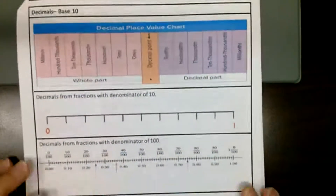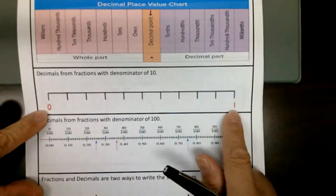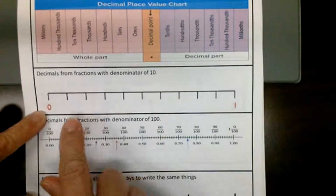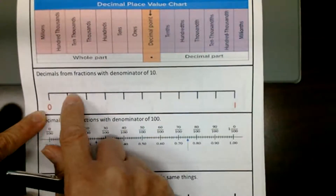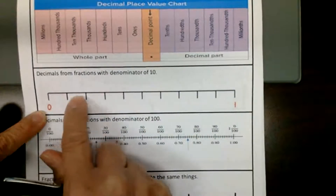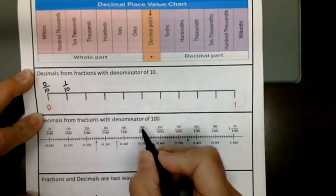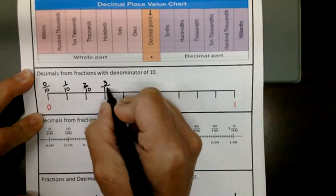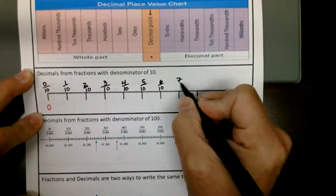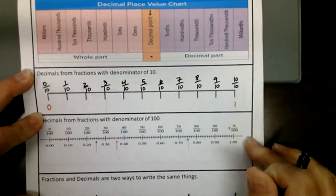Decimals from fractions with a denominator of 10. In 3.1A, we learned that if zero is here and one is here, we count how many pieces we broke that whole into, and that's the denominator. So if we start at zero and count: one, two, three, four, five, six, seven, eight, nine, ten — each of these pieces is one-tenth. So this would be zero-tenths, one-tenth, two-tenths, three-tenths, four-tenths, five-tenths, six-tenths, seven-tenths, eight-tenths, nine-tenths, and ten-tenths would be one.